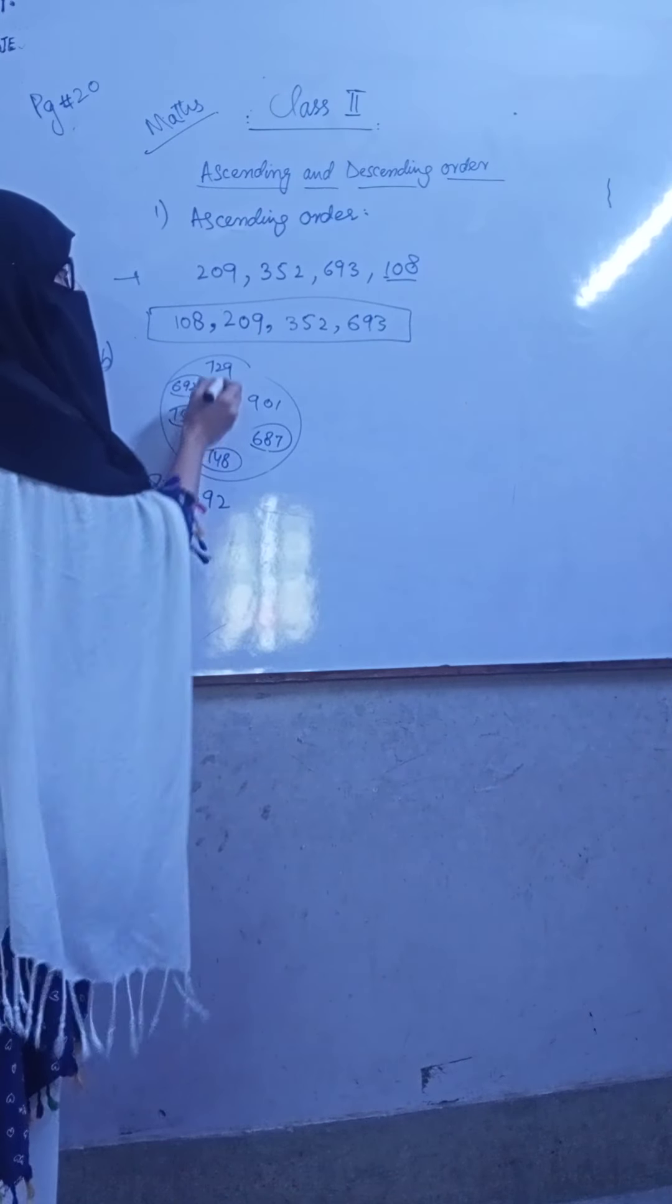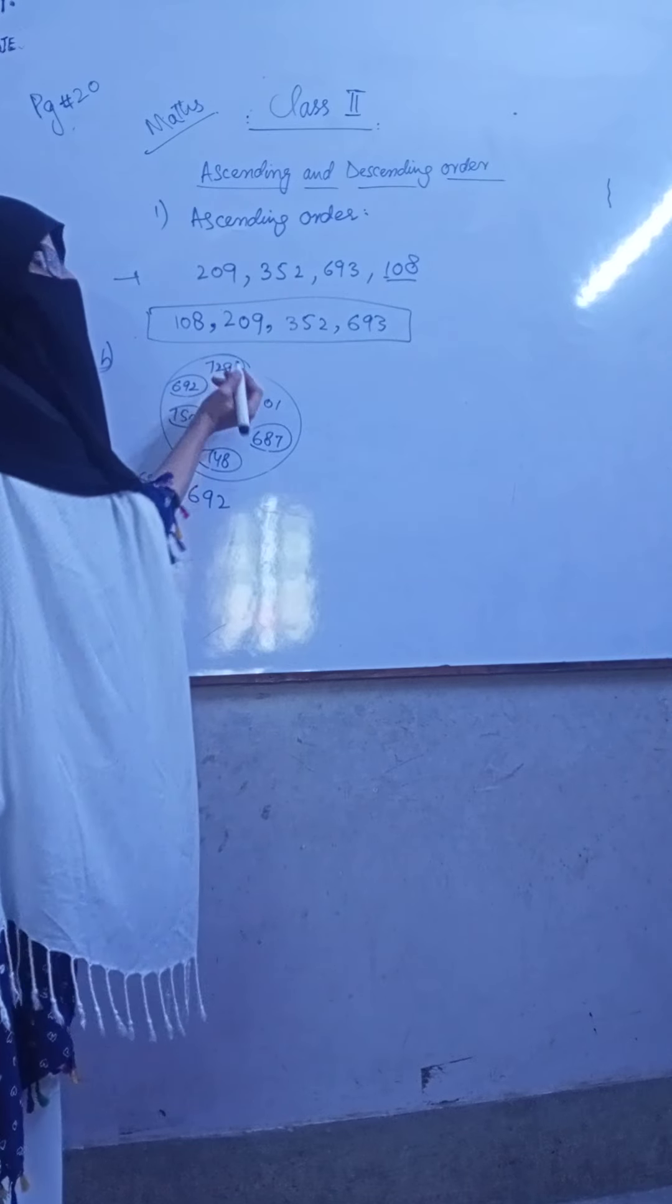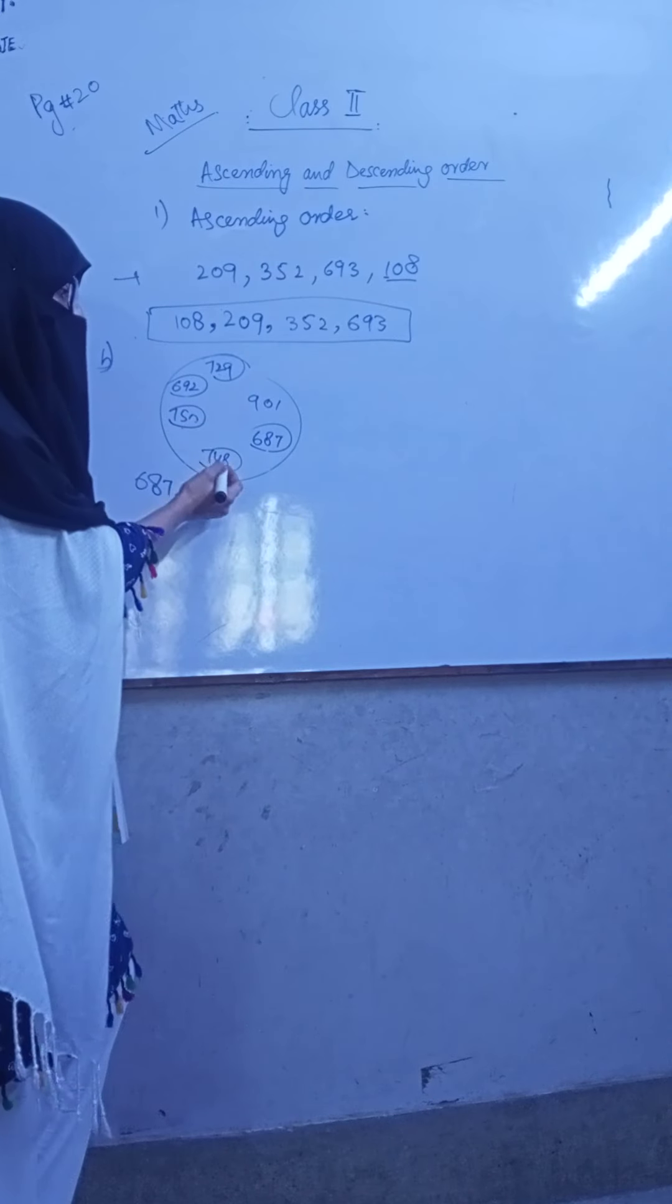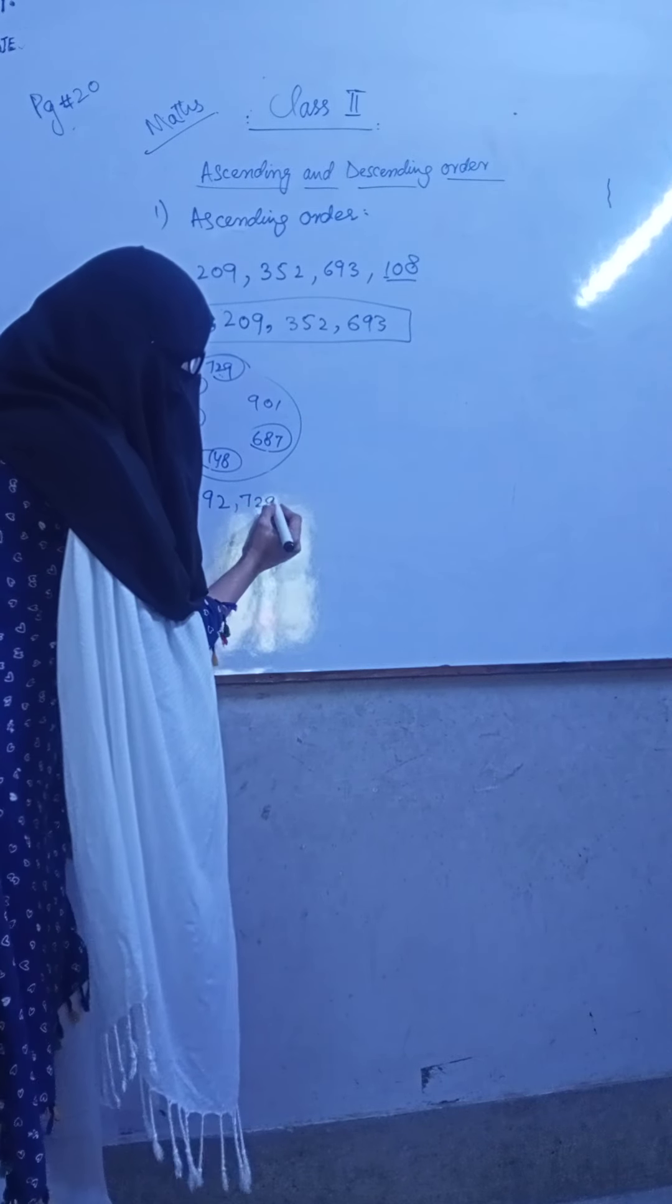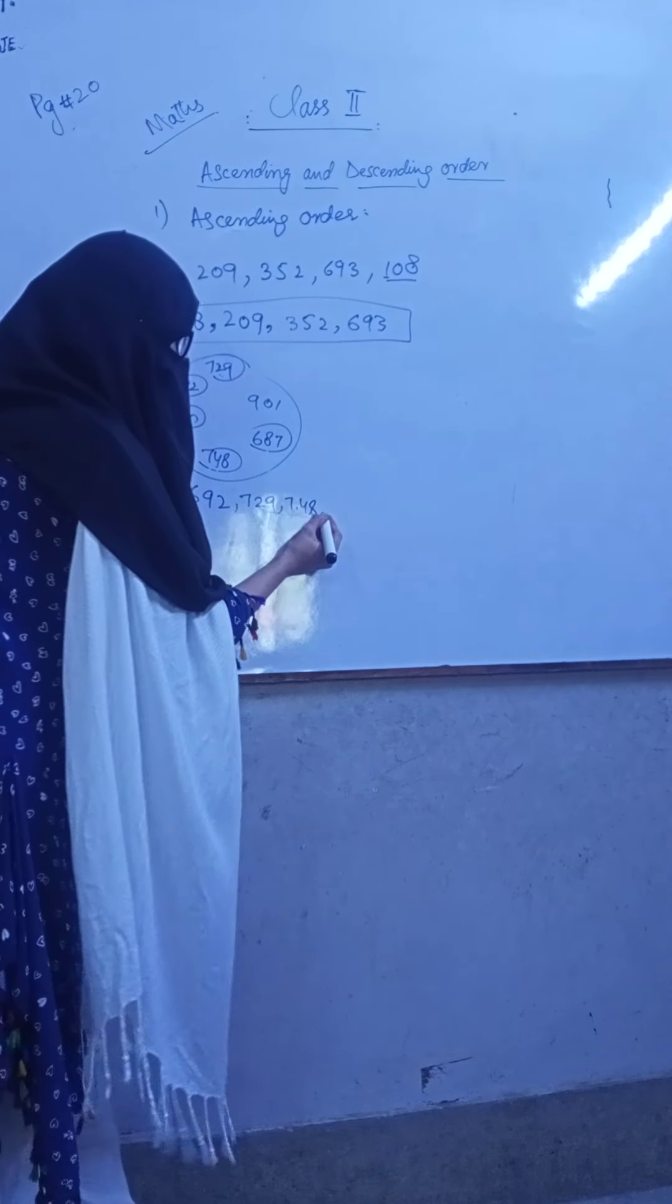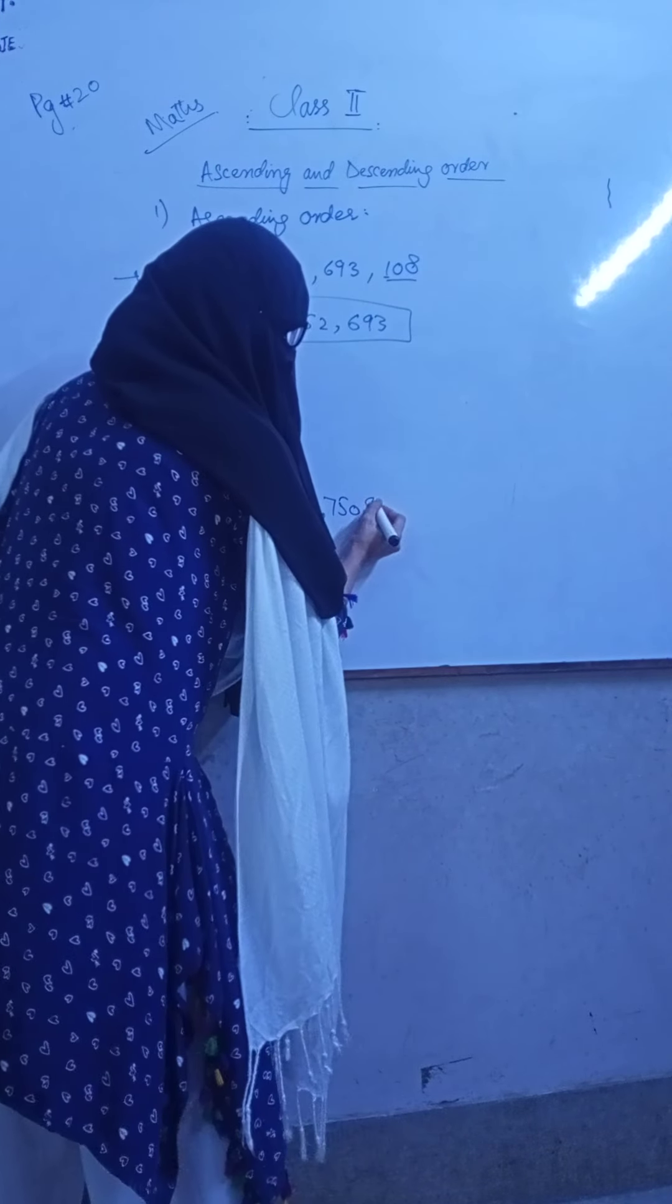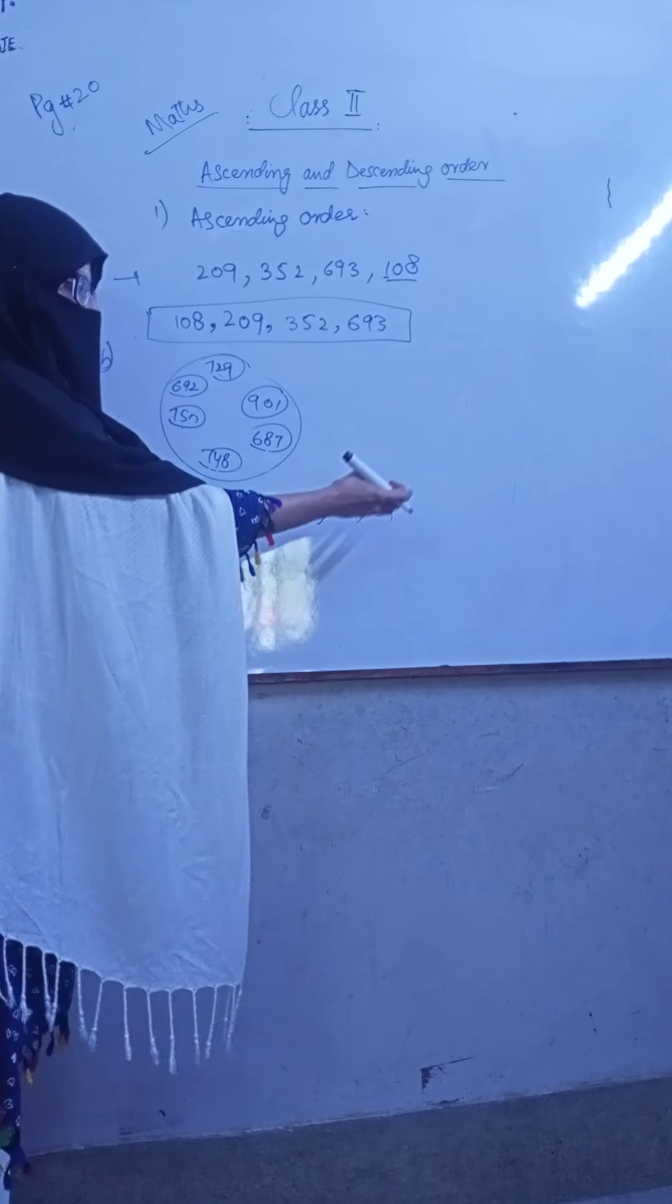Now 700, 700, 700. Then 729, 748, 750, and 901. This is called Ascending Order, when we start from the smallest number and go to the largest number, to the greatest number.